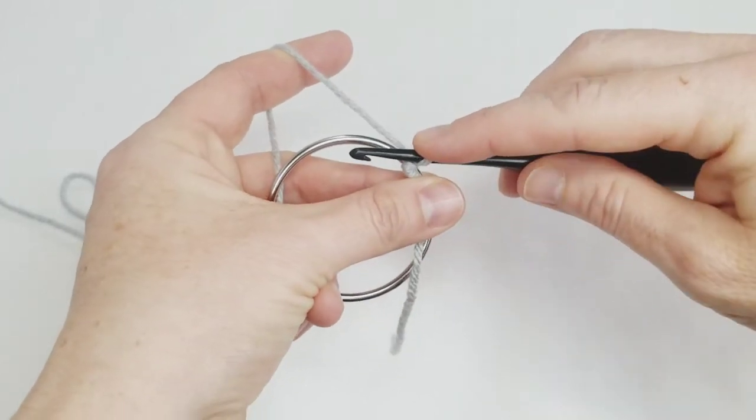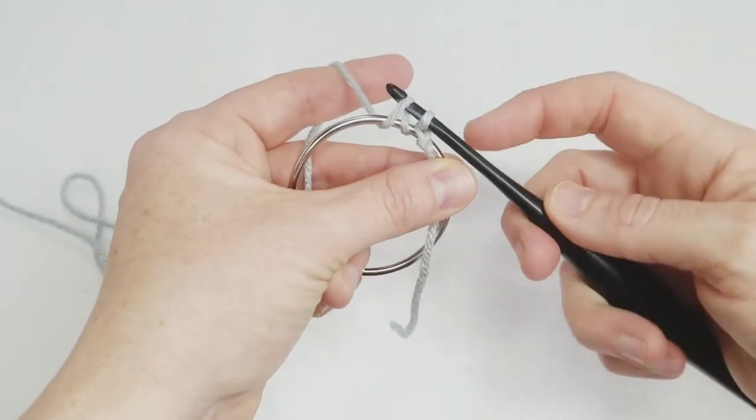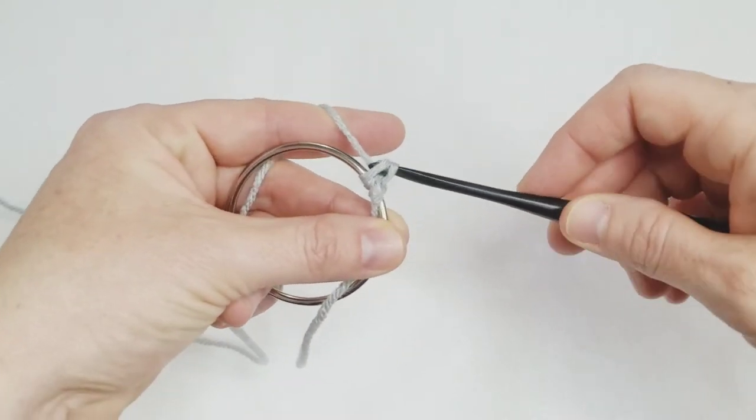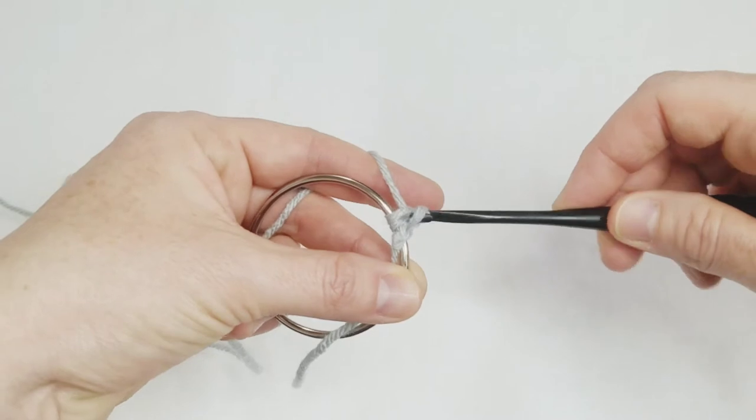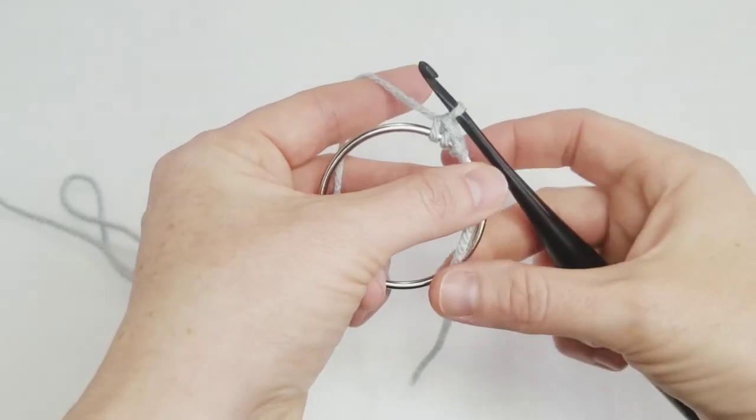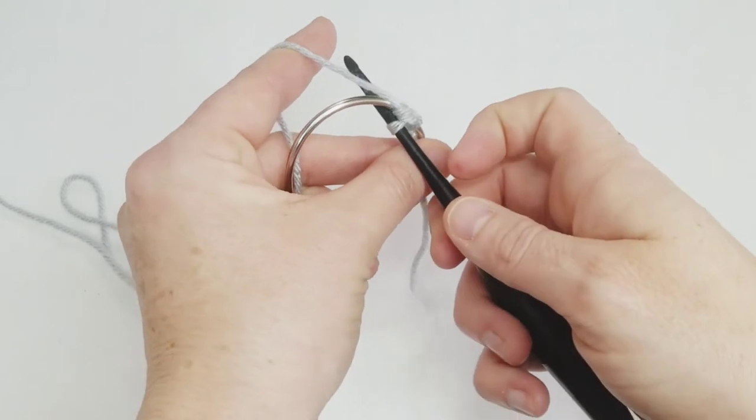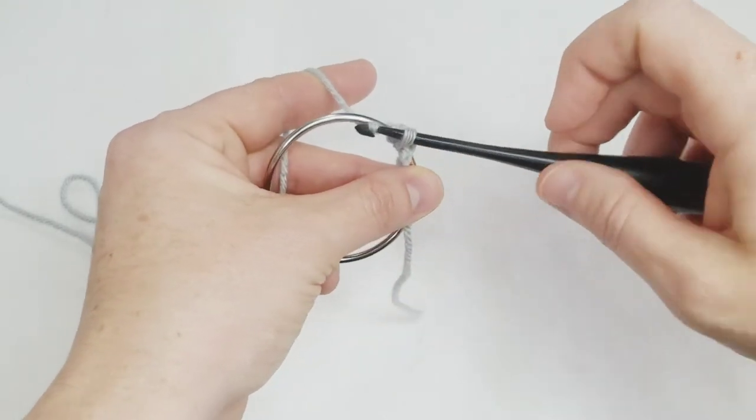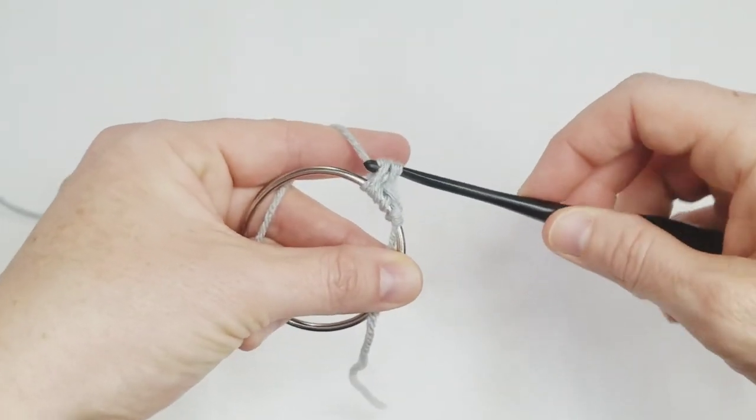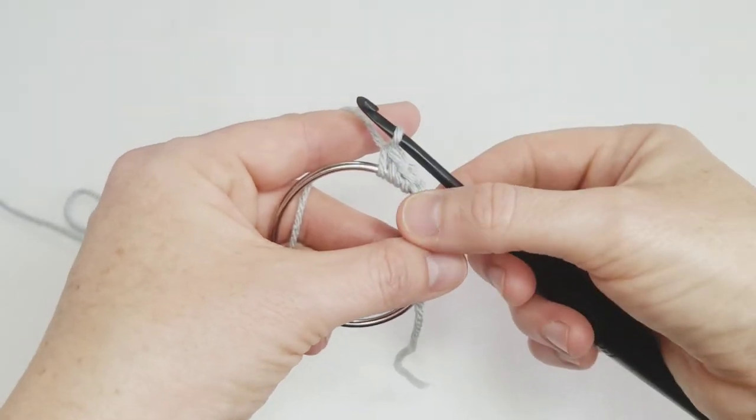To start your first stitch, you're going to go through the center of your hoop, pull up a loop, then you're going to yarn over above your hoop and pull through to make a single crochet. Let me show you that again. Holding my tail to the right side, I'm going to go through the center of my hoop, yarn over, pull up a loop. You can see I have one, two stitches on my hook now.